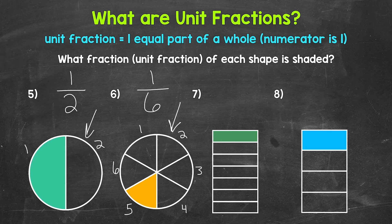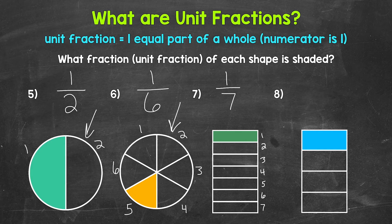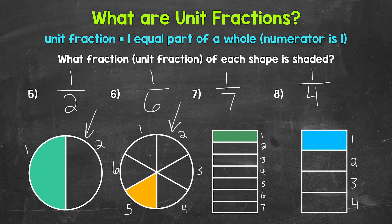The focus of this video isn't comparing unit fractions — we'll get into that more in another video — but I at least wanted to mention it. Moving on to number seven: the whole rectangle has been divided into one, two, three, four, five, six, seven equal parts. So our denominator is seven, and one of the equal parts is shaded. Our unit fraction is one-seventh. For number eight, the whole has been divided into one, two, three, four equal parts. Four is our denominator, and one equal part is shaded. Our unit fraction for number eight is one-fourth.